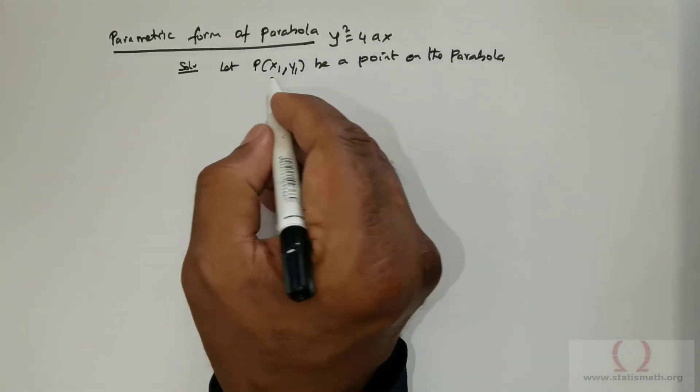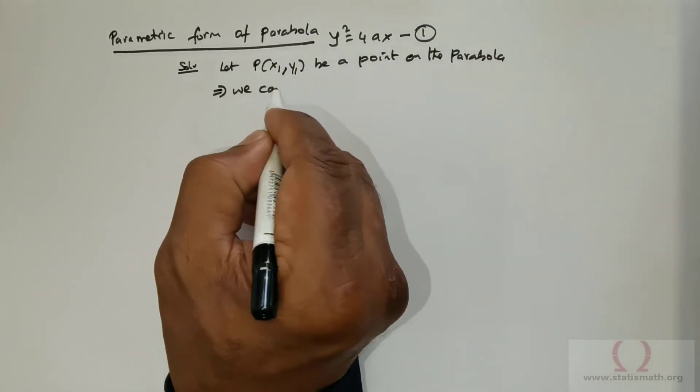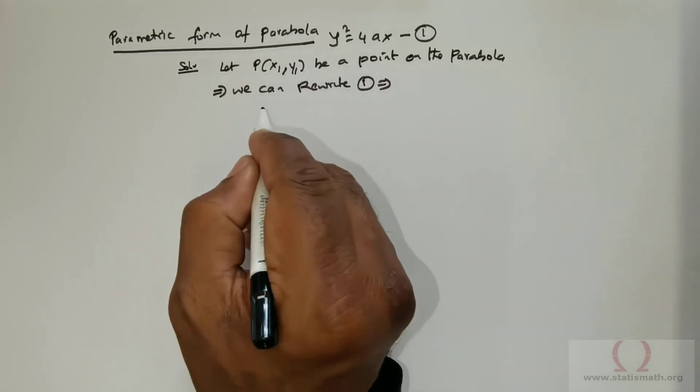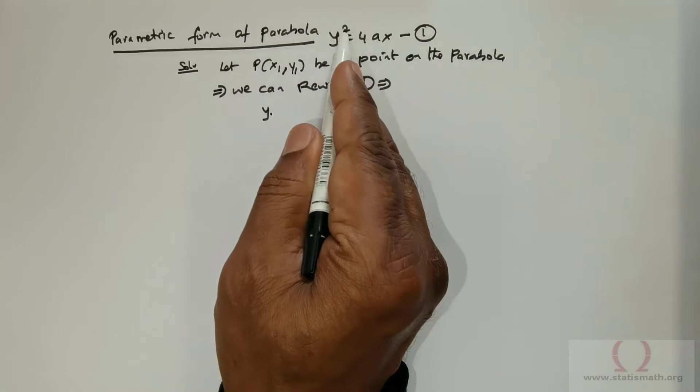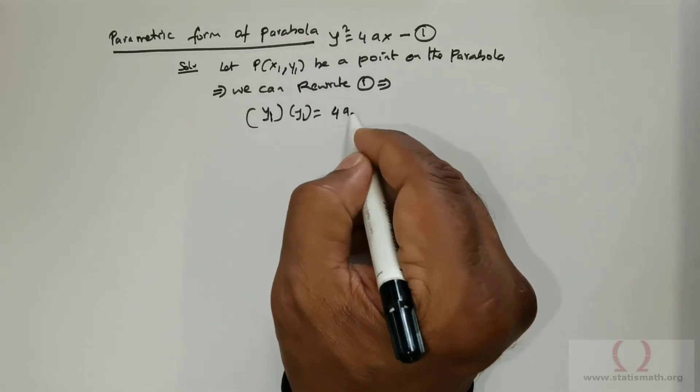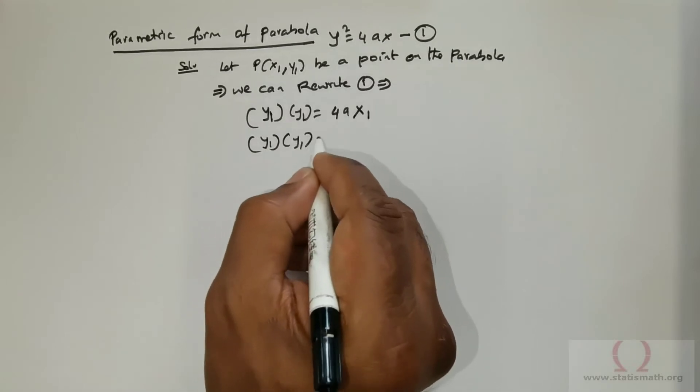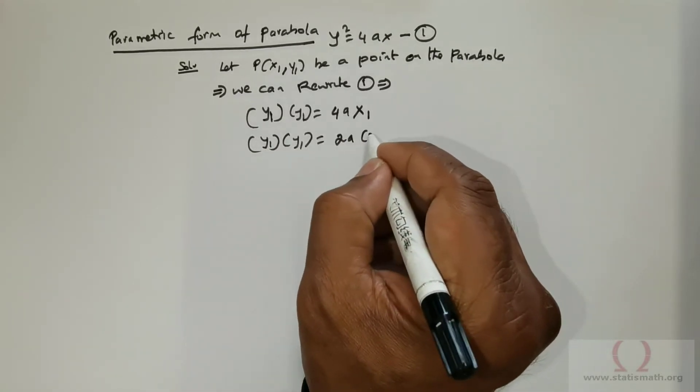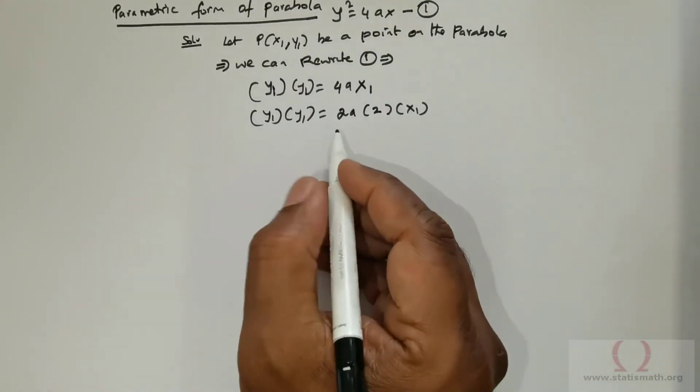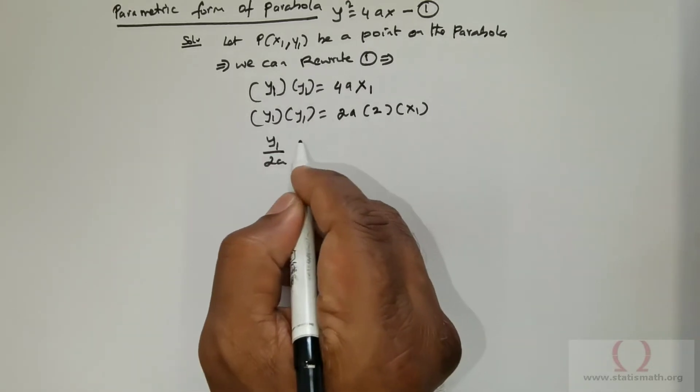Since this is a point on the parabola, we can rewrite it as y₁² = 4ax₁, or y₁ × y₁ = 2a × 2x₁. Now, I am going to bring 2a down and move y₁ to the other side, giving us y₁/2a = 2x₁/y₁.